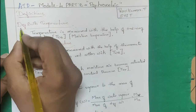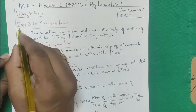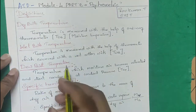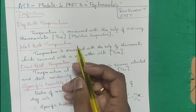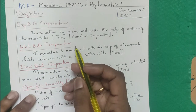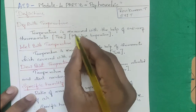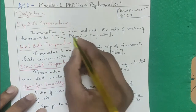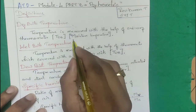The first definition is dry bulb temperature. Dry bulb temperature is measured with the help of an ordinary thermometer. Dry bulb means it is the ambient (moisture) temperature.